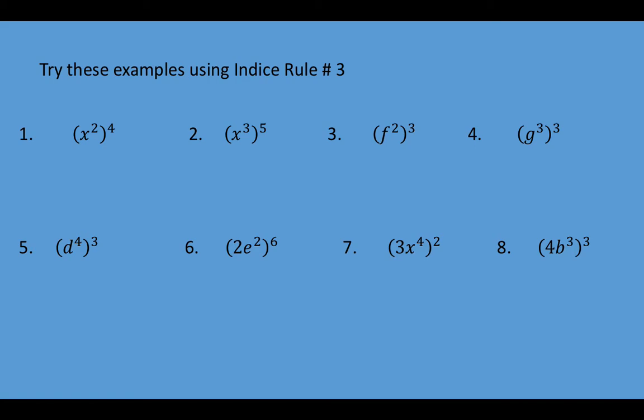Okay, question number one: we have to consider x squared to the power of 4. Now, if we assume that this rule number 3 is accurate, then all we have to do here to get the answer is multiply the 2 and the 4 together, and that would give us the answer 8. Similarly with number 2, 3 times 5 gives us 15. Number 3, f squared to the power of 3 is going to be 6, so that's f to the power of 6. 3 times 3 in number 4 would give us 9, so we're expecting the answer to be g to the power of 9.